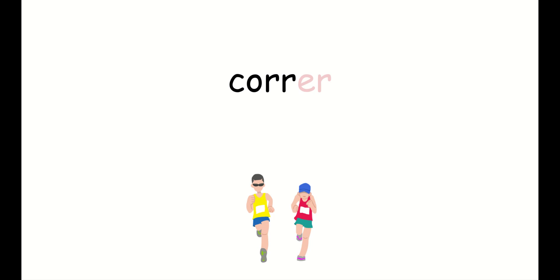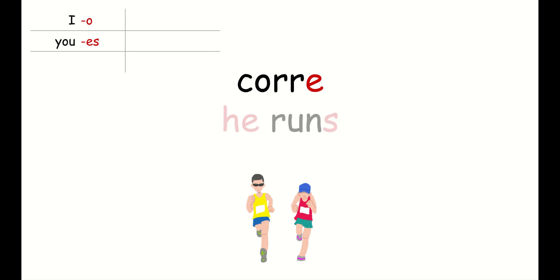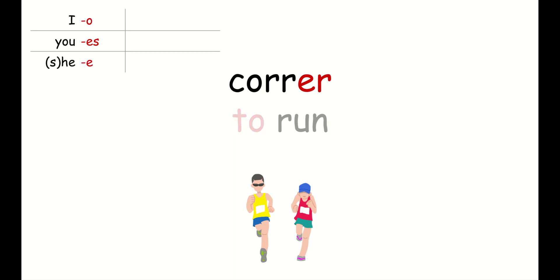The endings you're going to add for ER verbs are really similar to AR verbs. For example, corró means I run — this is the exact same thing as AR verbs; the O means I. If you want to say you run, you would chop off the ER at the end of correr and say corres — you run. The S is the you-ending for ER verbs. Corre means he runs; it could also mean she runs or it runs.